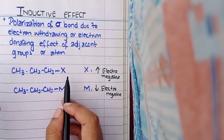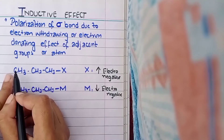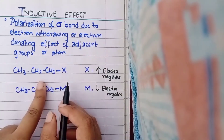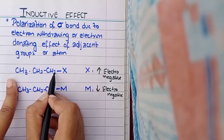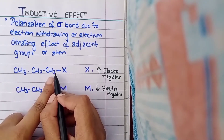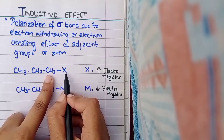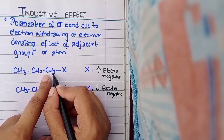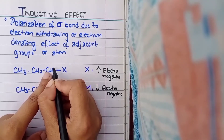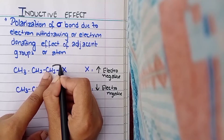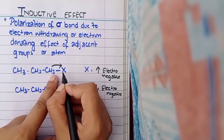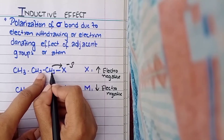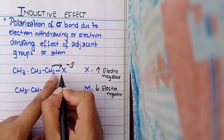Consider a chain of three CH3 groups, all attached with sigma bonds, and the last CH3 is attached to X with a sigma bond. This X has a high electronegativity compared to CH3, so X is going to snatch or withdraw the electrons from the adjacent CH3. Once it has withdrawn those electrons, X gets a partial negative charge.